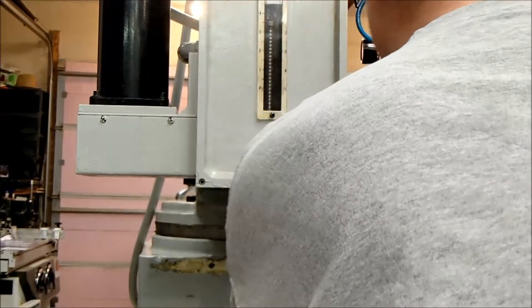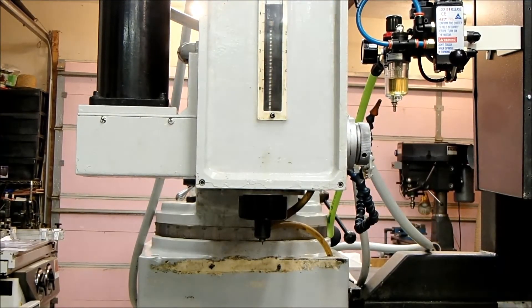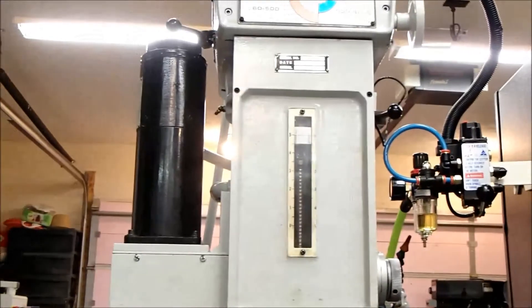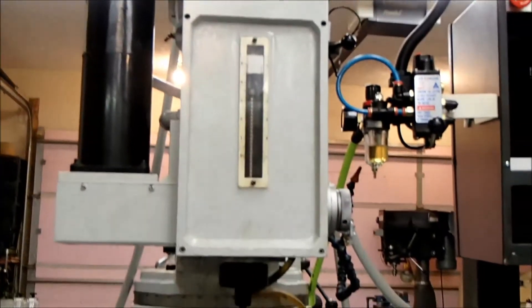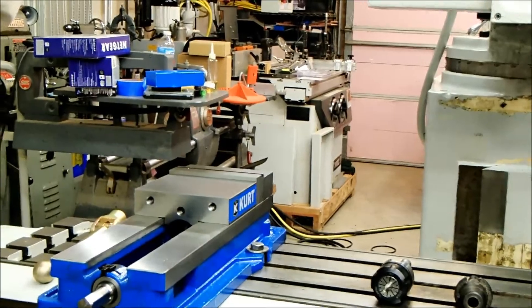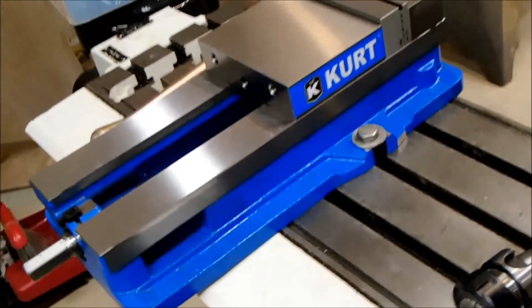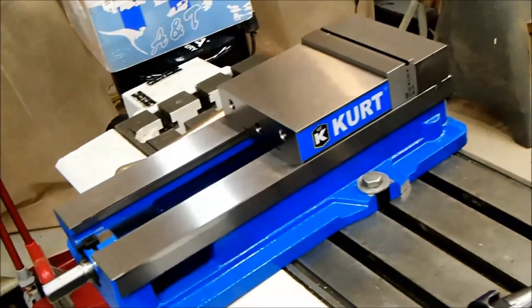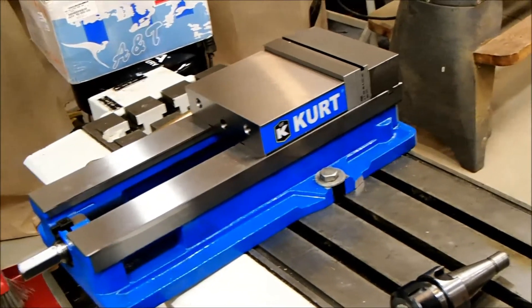Mount your next tool and you're ready to hit cycle start for your next job. Once again, that's the Aussie ADB123 universal draw bar and the Kurt D688 six-inch machine vise with 8.8 inches of opening. Thanks a lot.